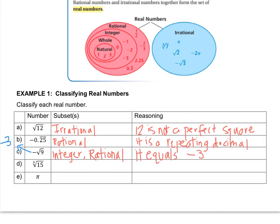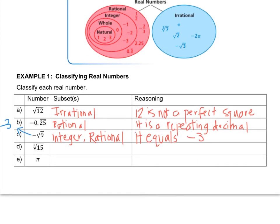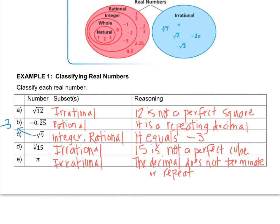And we'll just say the reason is because the negative radical 9 is equal to negative 3. The next one is the cube root of 15. Which category do you think it would land in? Well, 15 is not a perfect cube, so therefore it's irrational. The same way that square roots have to be perfect squares, cube roots have to be perfect cubes. And then I just told you earlier, pi is irrational as well. And the reason that we'll say for this is that the decimal does not terminate or repeat. All right, when you're ready, let's move on.